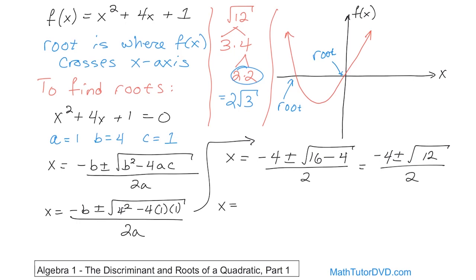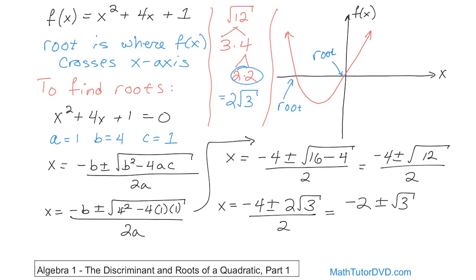So going back: negative 4 plus or minus the square root of 12 — which we now know is 2 times the square root of 3 — over 2. You're dividing this entire thing by 2, and you notice that the 4 is divisible by 2 and the 2 out front of the radical is divisible by 2. Dividing each term by 2 gives you negative 2 plus or minus square root of 3.